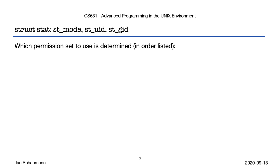Knowing which permissions we need, we can now look at the order of consideration of the eUID and eGID, which will influence which permissions set — user, group, or other — are going to take effect. Note that this decision tree is ordered; the first condition that applies decides. If your process has eUID 0, then access is granted. That's it. Note that this is irrespective of the permissions on the file — they are simply not considered. If you are root, you get to do whatever you want.